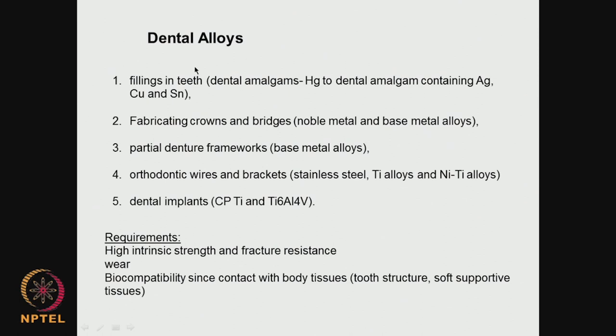Dental alloys — this is another big area where metals are used. Filling in teeth — dental amalgams. I think dental amalgams have been used like mercury-based for hundreds and hundreds of years, even thousands. When dentistry became popular almost 1000 years back, they used silver and mercury, copper and mercury, strontium and mercury. The beauty of mercury is it can easily adapt to the shape and gap, fills up, and quickly solidifies. That is why amalgam is still used quite popularly.